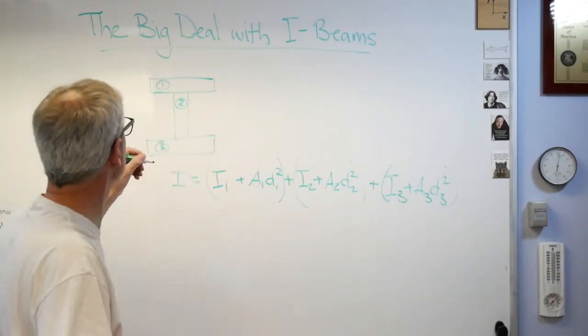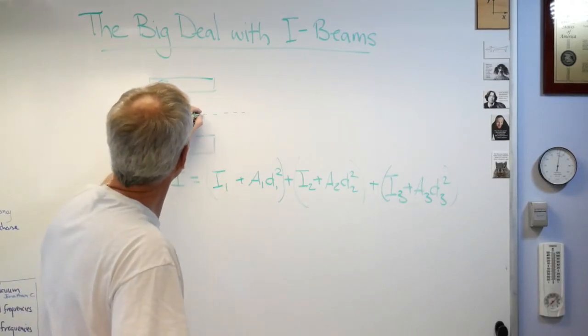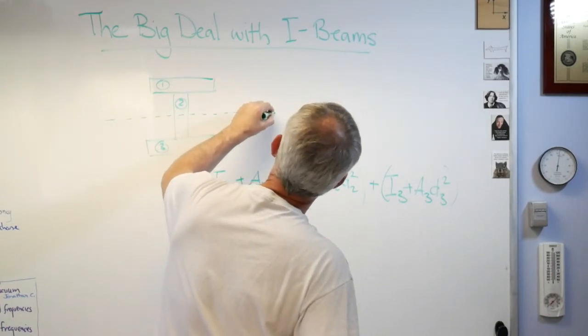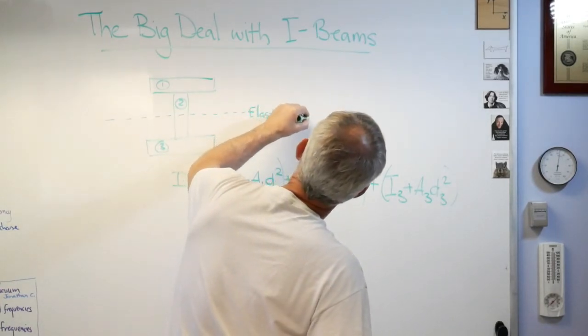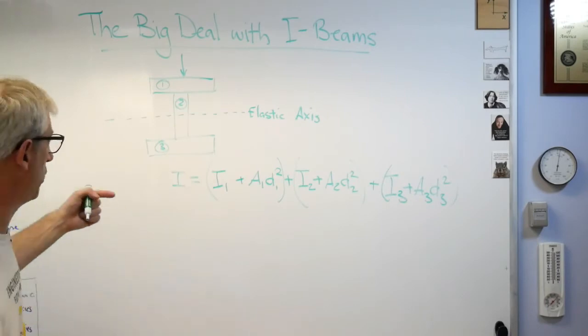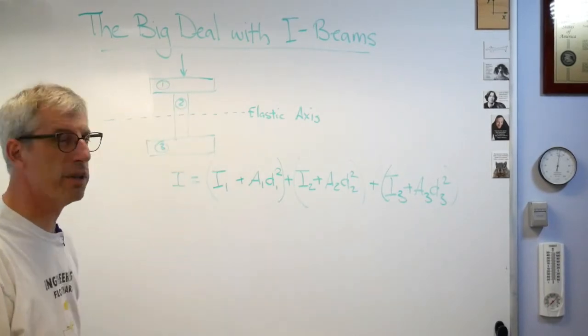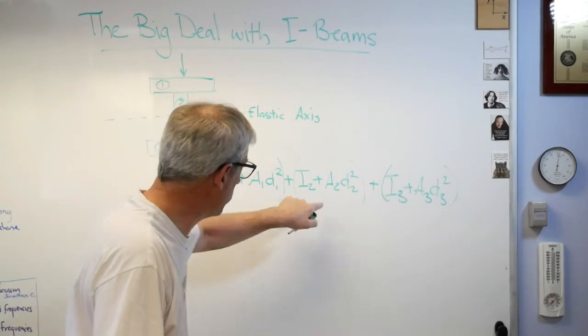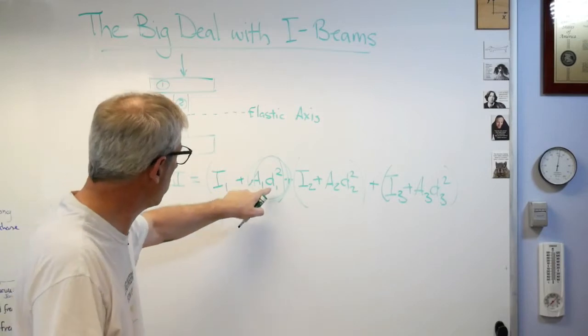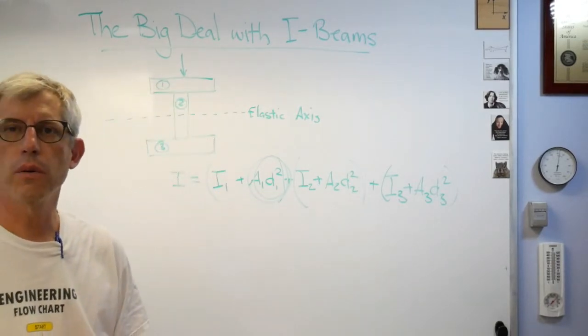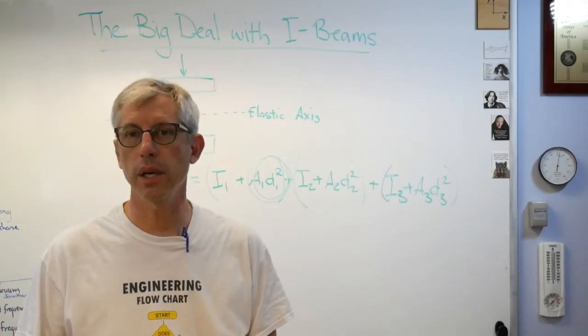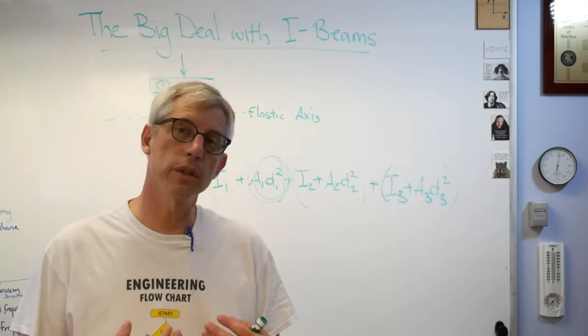This is the important part right here: it's the area times the distance from the centroid squared. This is a symmetric shape and we'll call this the elastic axis right there because it's in the center. Just to be clear, it's assumed here the force is going to come from the top. We're interested in stiffness up and down. See that thing right here, Ad²? There's the area, but d²—that's the thing we care about. The farther we can put the material from the elastic axis, from the centroid, the stronger and stiffer the beam is going to be.